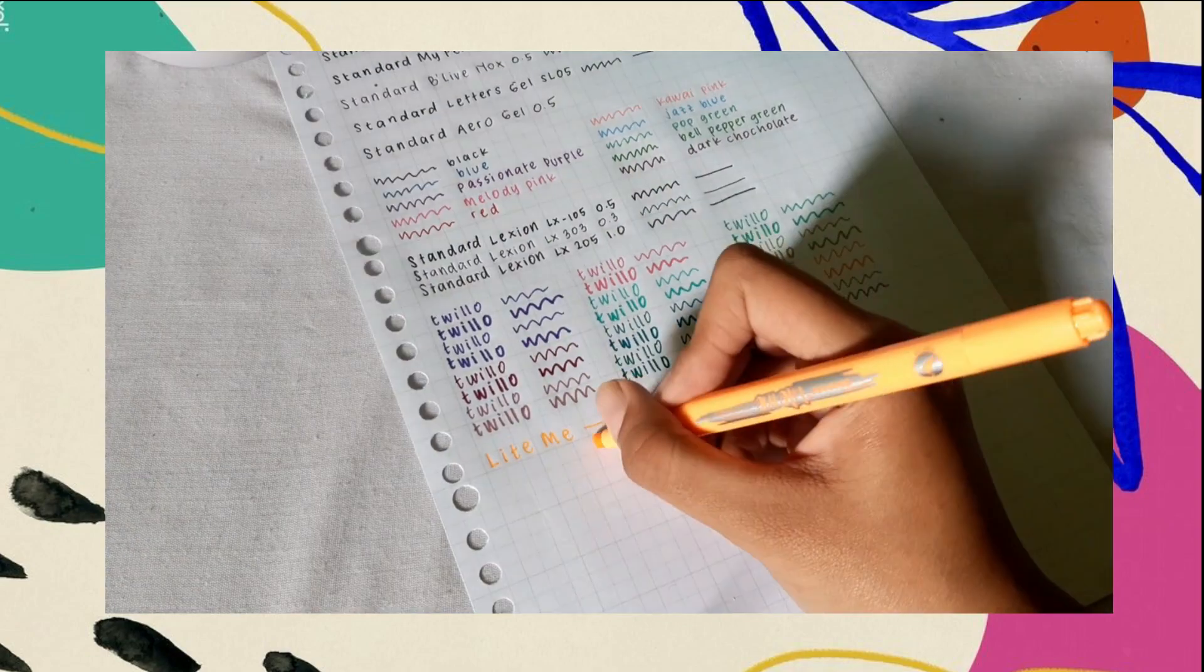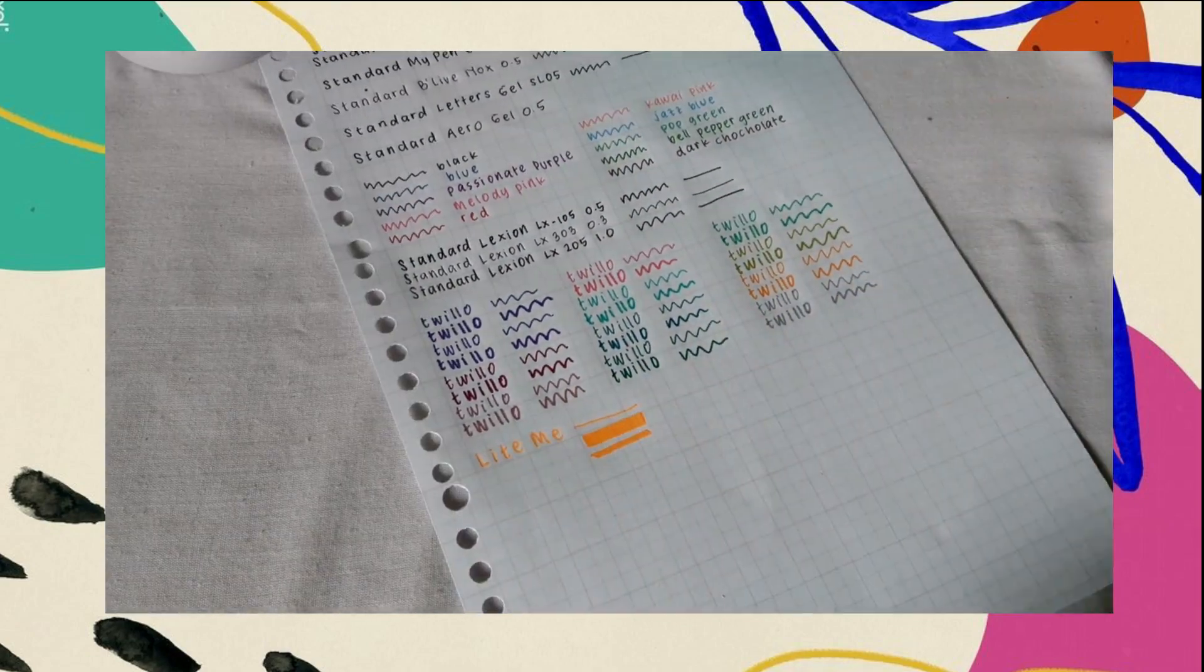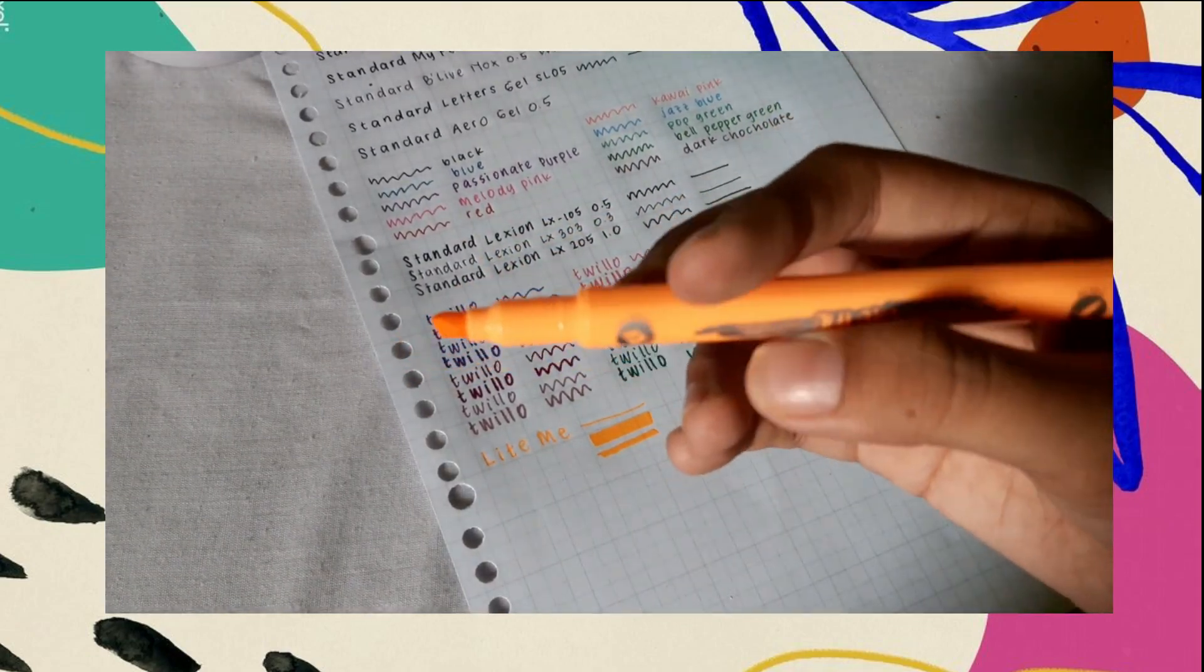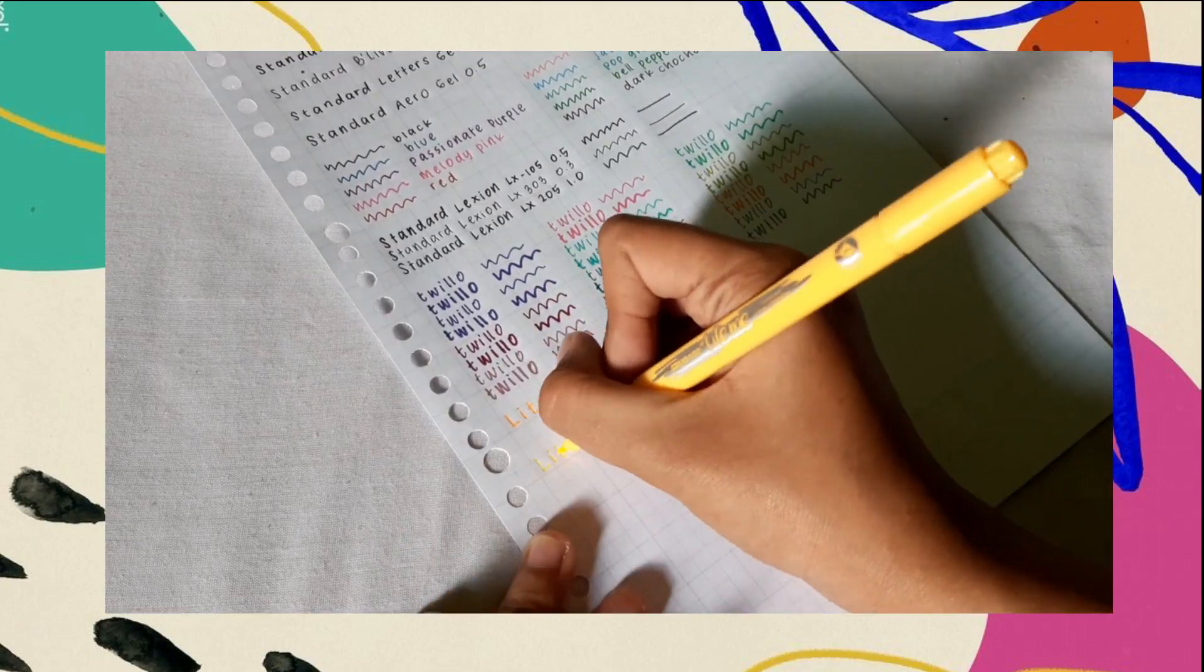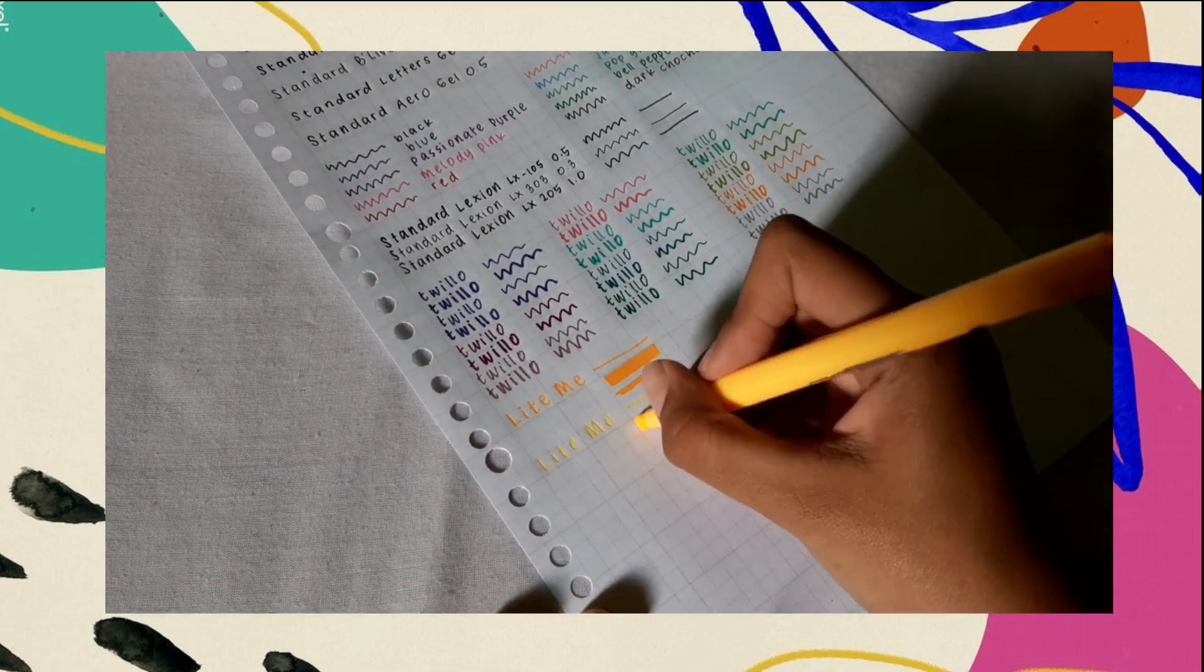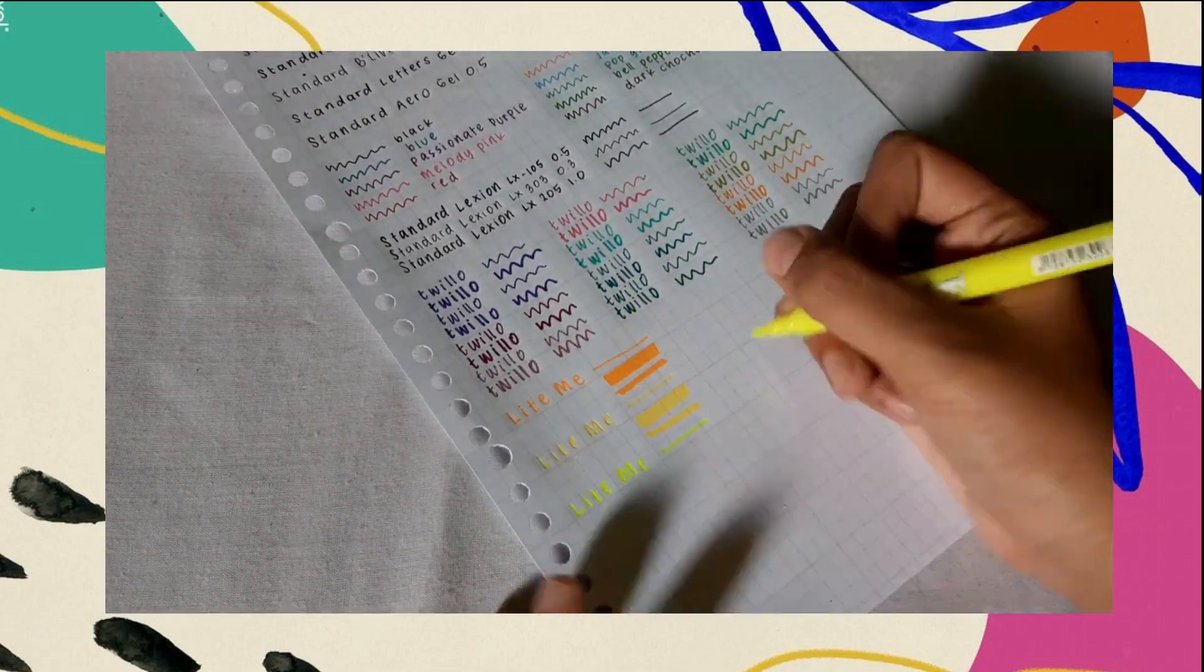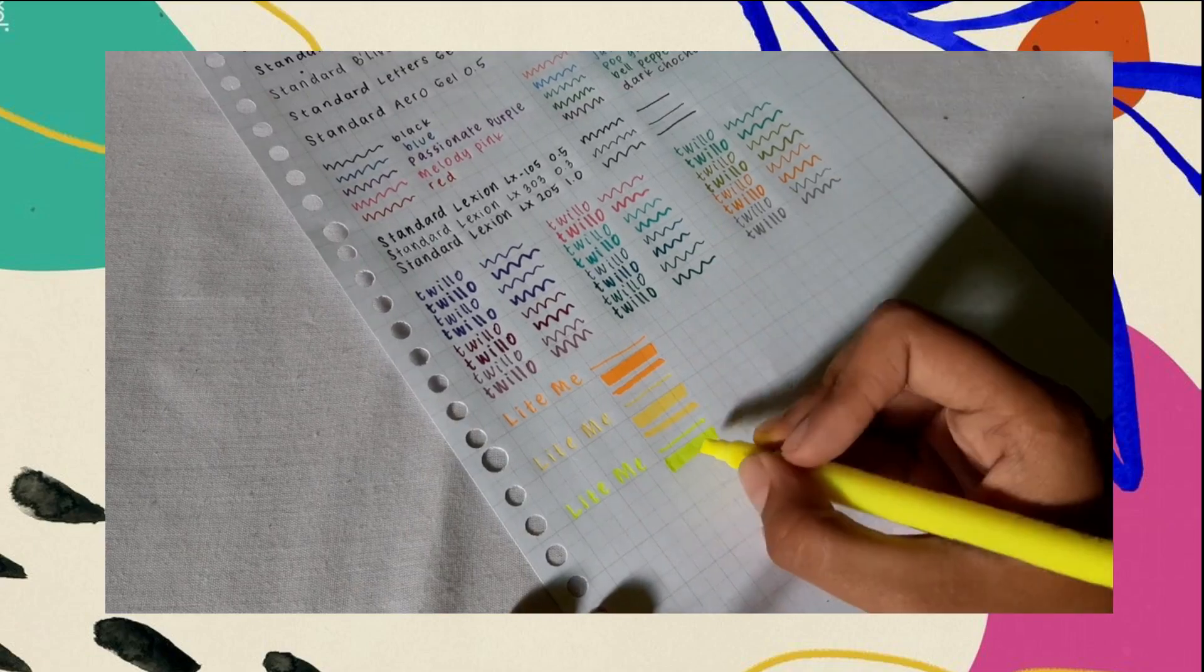Karena warna yang neon, jadi pas di swatch tuh warnanya keluar banget. Oh iya, di chisel tip ini ada 2 macam ukuran loh buat nge-highlight, ada yang lebar dan ada yang sedang. Untuk fine tip ini, cocok banget buat nge-underline catatan kalau kalian lagi gak pengen pake highlighter.